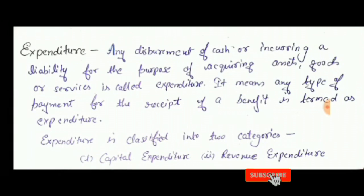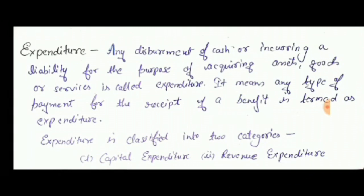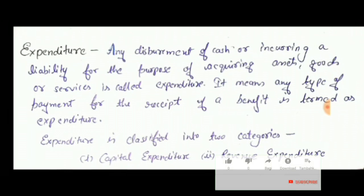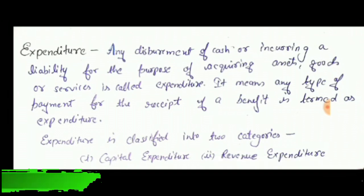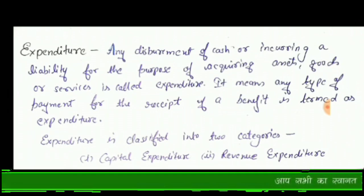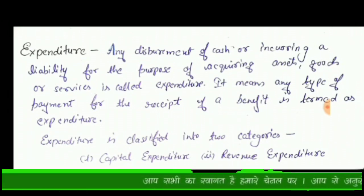Our first term is expenditure. Any disbursement of cash or increasing a liability for the purpose of acquiring assets, goods, or services is called expenditure. It means any type of payment for the receipt of a benefit is termed as expenditure.